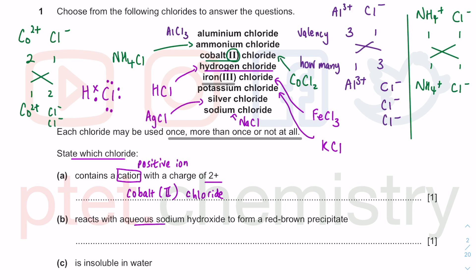The next one reacts with aqueous sodium hydroxide to form a red-brown precipitate. This red-brown precipitate indicates a transition metal hydroxide. You get this with iron(III): Fe3+ plus 3OH- gives a classic year 9 precipitation reaction producing this red-brown precipitate. The ionic equation shows one Fe3+ combining with three OH- to give an ionic solid precipitate. We're looking at iron(III) chloride.